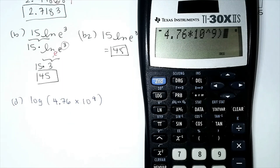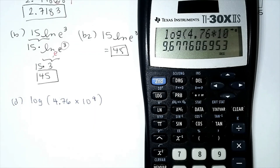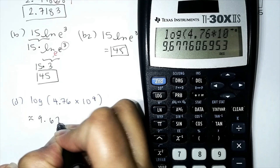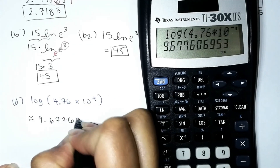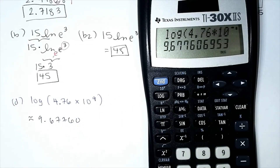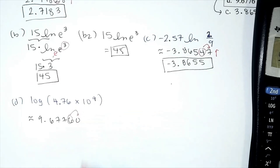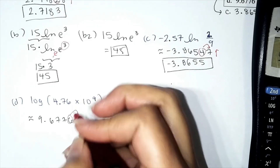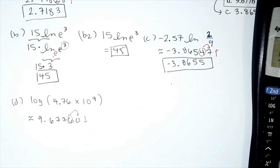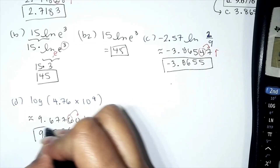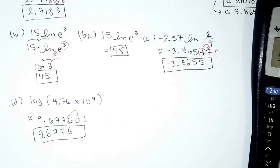Close the argument and hit Enter. The result is approximately 9.677601. To round to four decimal places, the fourth digit is 6 and the next digit tells us to round down — we keep the 6 as is, drop remaining digits. So log(4.76 × 10⁹) to four decimal places is approximately 9.6776. That's it for today — thanks!